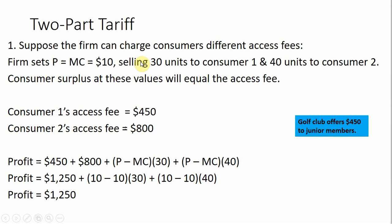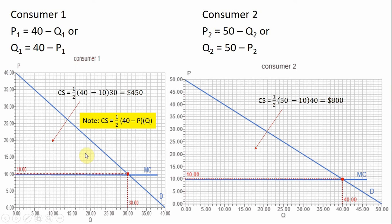So the two-part tariff — the first case: suppose the firm can charge consumers different access fees. The firm will set price equal to marginal cost, selling 30 units to consumer one and 40 units to consumer two. Consumer surplus at these values will equal the access fee. Assuming consumers can be charged different access fees, the profit-maximizing strategy is to set price equal to marginal cost for both consumers, and then the consumer surplus will represent the access fee for each consumer.